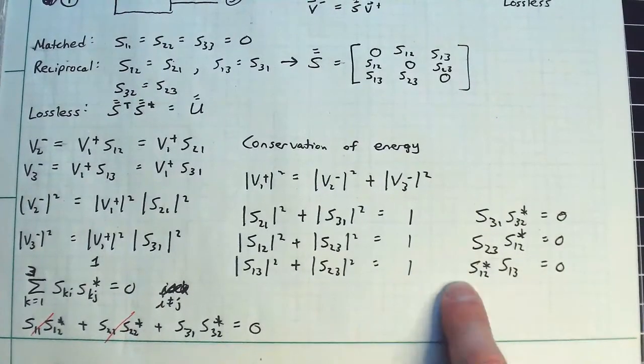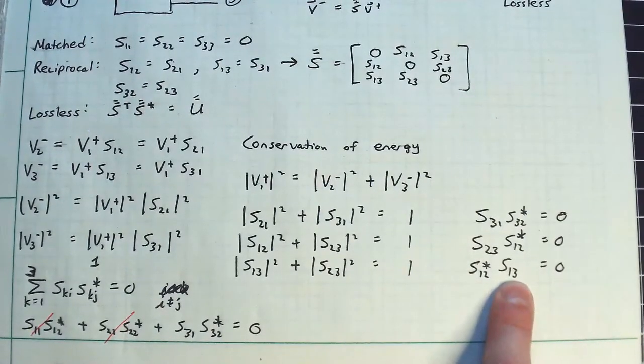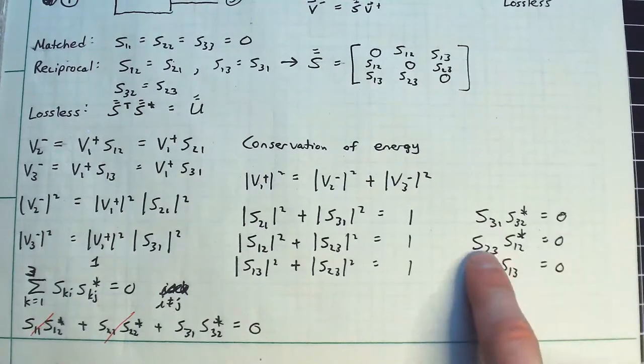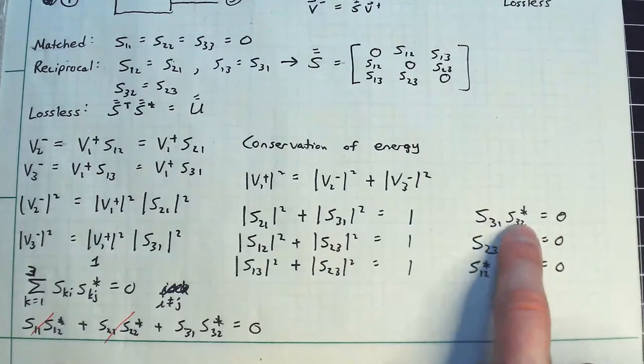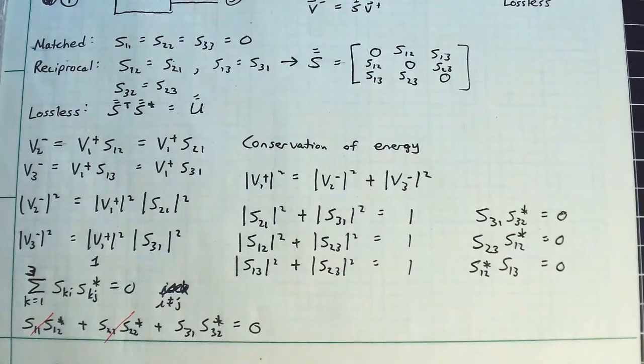In order for this product to be true, one of these terms has to be zero. And then in order for this product to be true, at least one of these terms has to be zero. And for this to be true, at least one of those terms has to be zero.